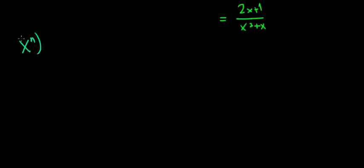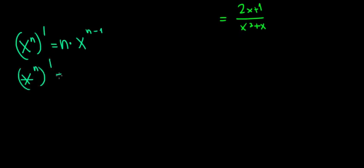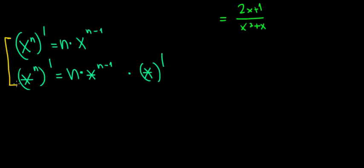For example, x to the power of n derivative equals n times x to the power of n minus 1. By the same logic, if we have an expression, star to the power of n derivative equals n times star to the power of n minus 1, times the star derivative. We add the derivative of the expression. I strongly encourage you to study all derivative formulas together with the chain rule, so you don't forget to take the derivative of the inner expression.